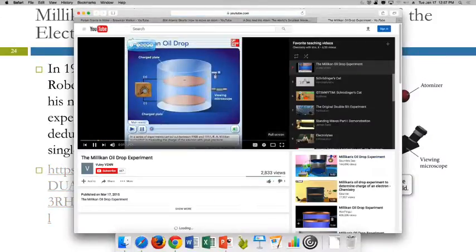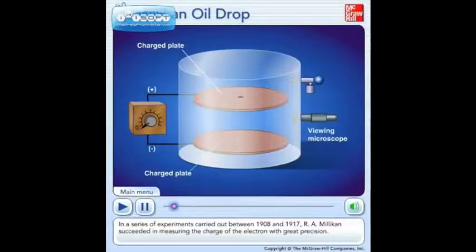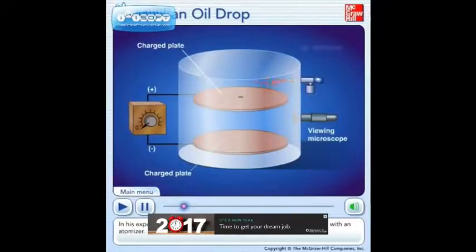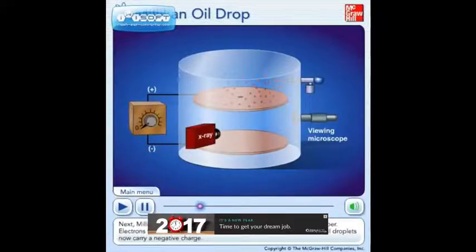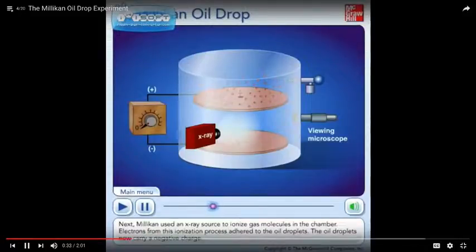In a series of experiments carried out between 1908 and 1917, R.A. Millikan succeeded in measuring the charge of the electron with great precision. In his experiment, a fine mist of oil was sprayed into the upper chamber with an atomizer. Some of the tiny oil droplets fell through the hole in the upper floor, and Millikan was able to determine the mass of an oil drop from its terminal velocity. Next, Millikan used an X-ray source to ionize gas molecules in the chamber. Electrons from this ionization process adhere to the oil droplets. The oil droplets now carry a negative charge.